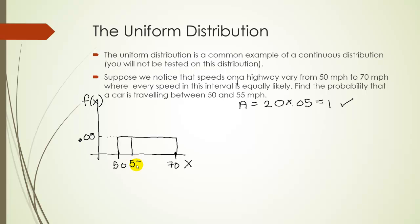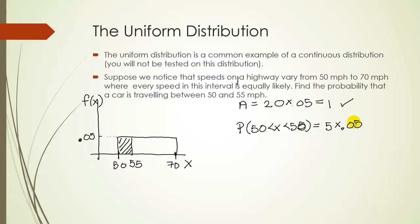The question asks: what's the probability someone is going between 50 and 55? We find the area of that shaded region. The probability that x is between 50 and 55 equals length times width — the length is 5 (difference between 50 and 55), and the height is 0.05. Multiplying gives 0.25. This makes sense intuitively: the range is 20 miles an hour, and 5 is exactly one quarter of that, so 25% of cars would be traveling between 50 and 55.